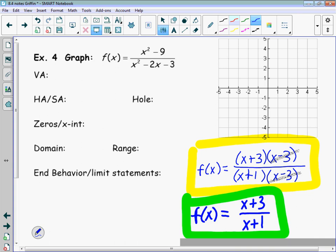We can start by first finding the y-intercept. The y-intercept we will find by plugging in 0 for x. So if we plug in 0 for x, we will end up with 0 plus 3 over 0 plus 1. So we'll have a y-intercept of 3. So we can put a point at 0, 3. Again, we're going to use the simplified version to do that.